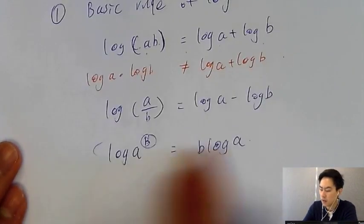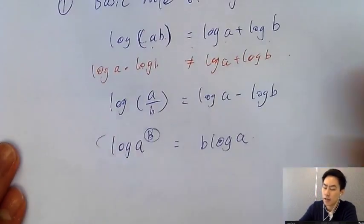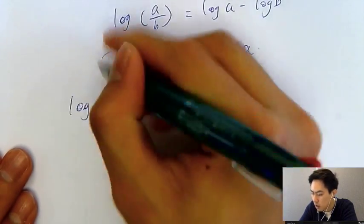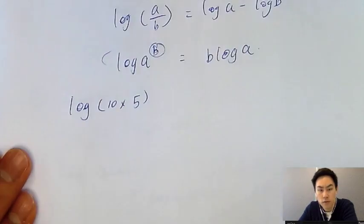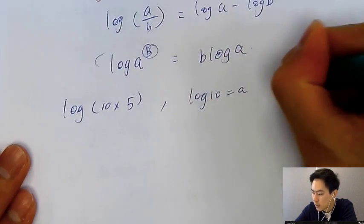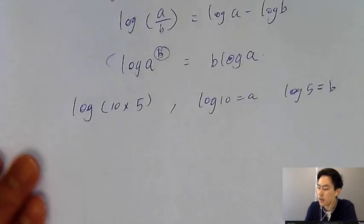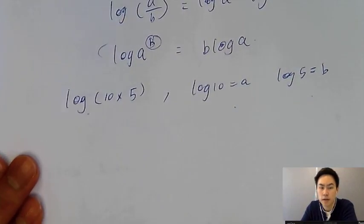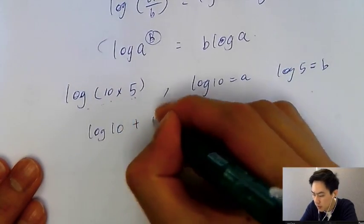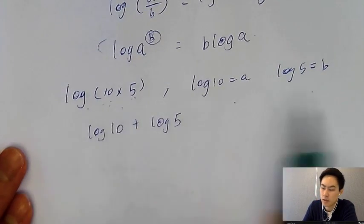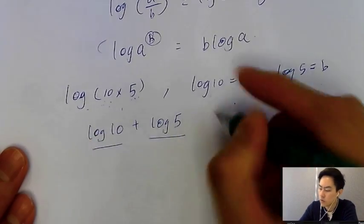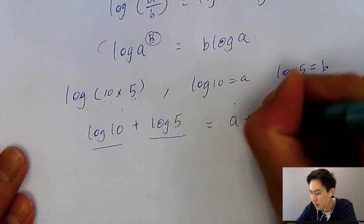Here's how an exam question looks. If you have log(10 × 5), and log 10 = A and log 5 = B, how do you express log(10 × 5) in terms of A and B? Since it's multiplication inside the bracket, you separate it: log 10 + log 5, which equals A + B. Many students get this wrong by writing A × B, but the correct answer is A + B.